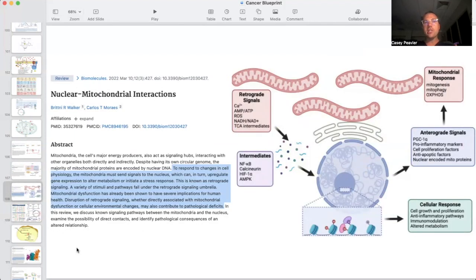And as I've kind of alluded to, there are actually direct communications between the nucleus of the cell, where the majority of the DNA is located at and the mitochondria. And as it says here, mitochondria, the cells major energy producers also act as signaling hubs interacting with other organelles both directly and indirectly. Despite having its own circular genome, the majority of mitochondrial proteins are encoded by the nuclear DNA to respond to changes in cell physiology, the mitochondria must send signals to the nucleus, which can in turn upregulate gene expression to alter metabolism or initiate a stress response. This is known as retrograde signaling, a variety of stimuli and pathways fall under the retrograde signaling umbrella. Mitochondrial dysfunction has already been shown to have severe implications for human health disruption of retrograde signaling, whether directly associated with mitochondrial dysfunction, or cellular environmental changes may also contribute to pathological deficits.